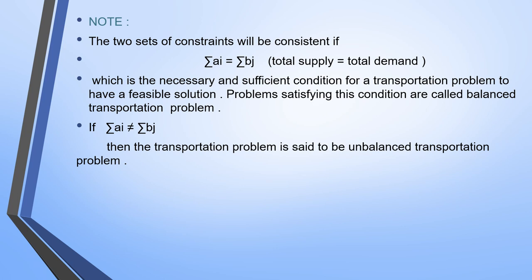Here is a key point to consider while solving the transportation problem. The two sets of constraints will be consistent if summation of Ai is equal to summation of Bj, where summation of Ai is the total supply and summation of Bj is the total demand. Total supply must equal total demand — this is the important condition for a transportation problem to have a feasible solution. Problems satisfying this condition are called a balanced transportation problem; otherwise it is an unbalanced transportation problem.